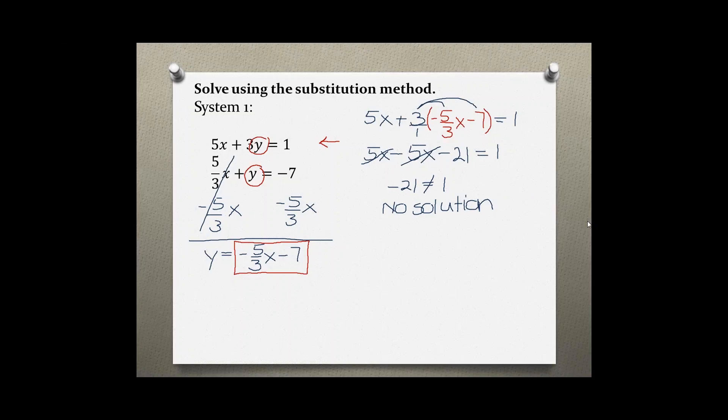No solution means when you visualize those two equations as lines, this means that they are parallel. So they never cross. There is no intersection point, and therefore there is no solution when solving the system.